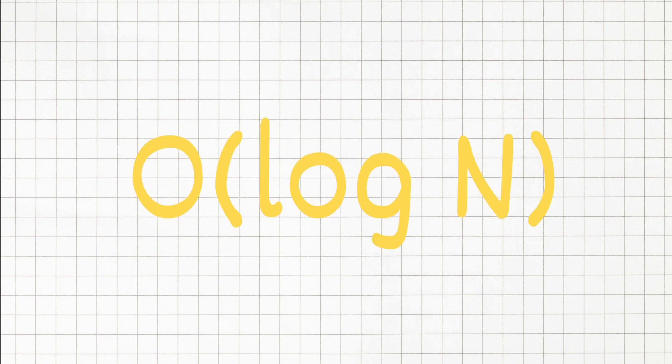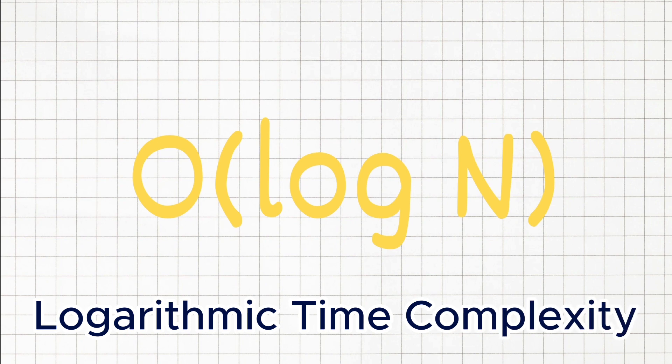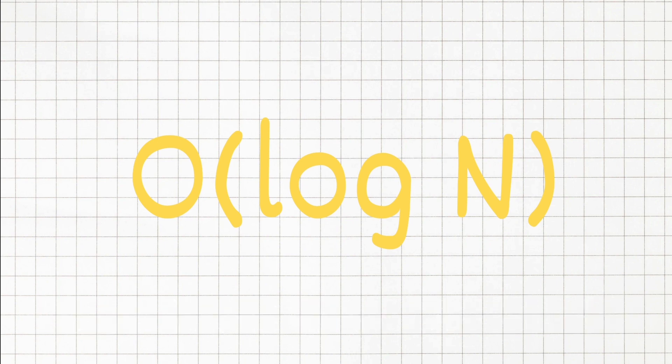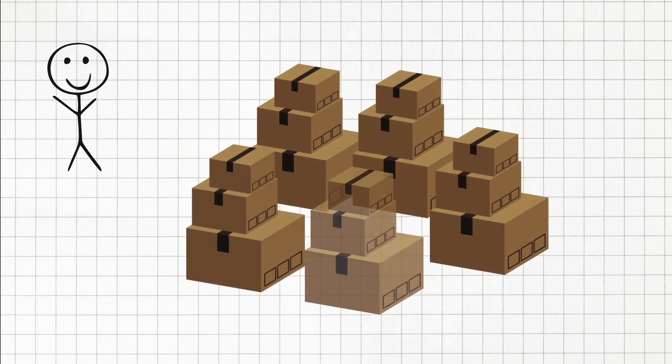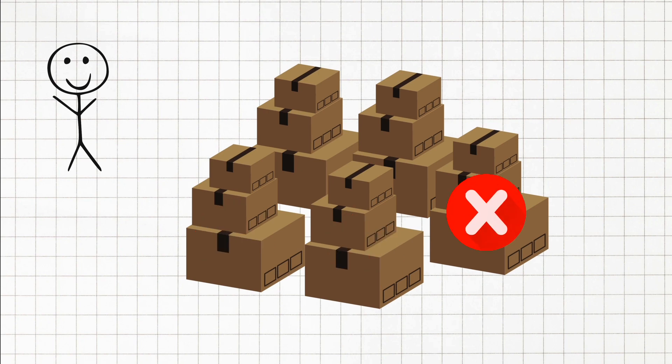Next up we have O of log n, or logarithmic time complexity. This is typically seen in searching algorithms. Imagine our room full of boxes again, but this time every step you take eliminates half of the remaining boxes.